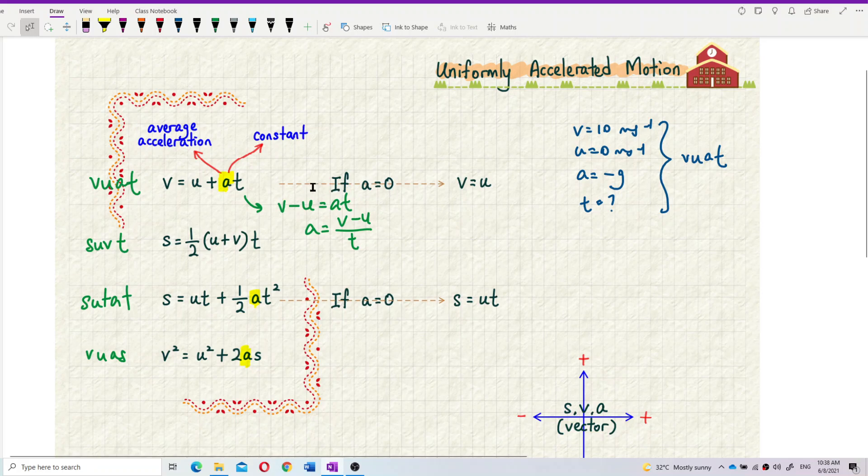In the case that, if the acceleration given is 0, if no acceleration, then this is what happens. When no acceleration, we substitute A equal to 0. Then 0 times time, you get 0 also. So that's why V equal to U. The same thing like this one, if we substitute A equal to 0, this one V square equal to U square. You also get V equal to U.